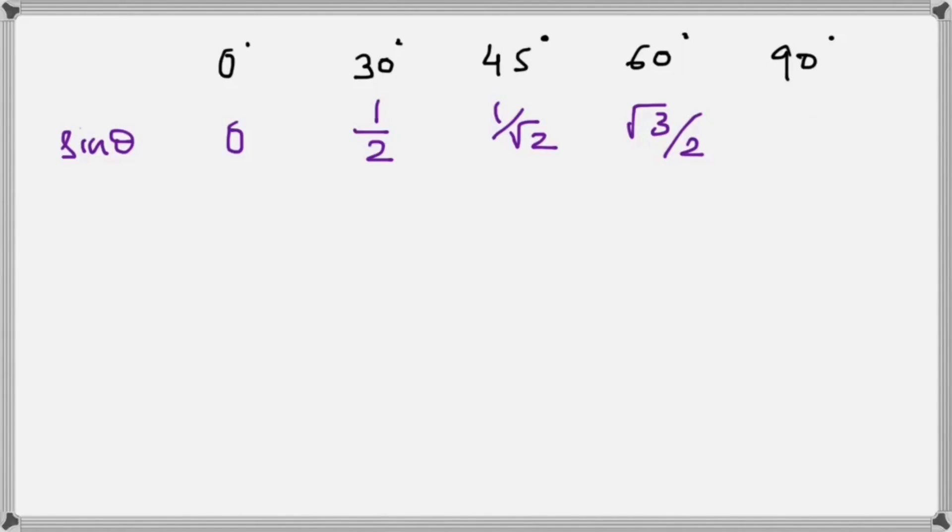If we write the values of cos θ for the same angles, we have 1 for 0°. We just reverse this order and get the results for cos θ. So 1, then comes √3/2, then we have 1/√2, then we have 1/2, and finally we have 0.